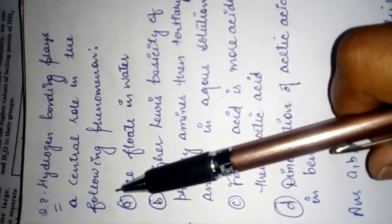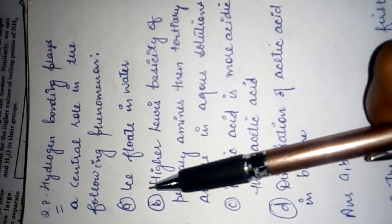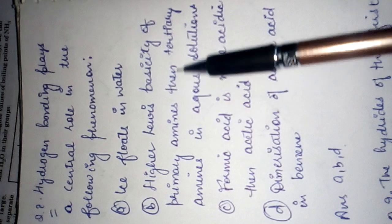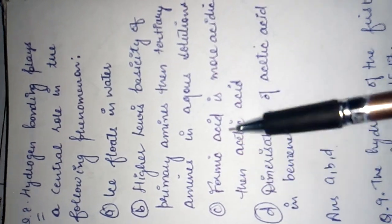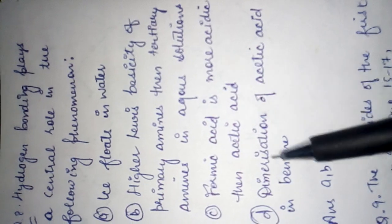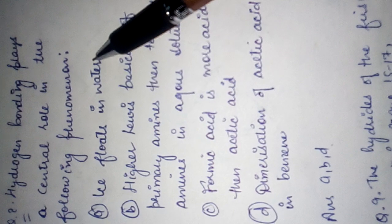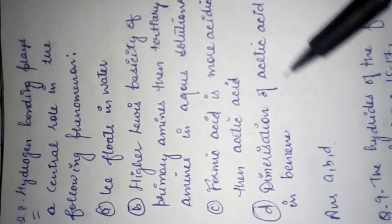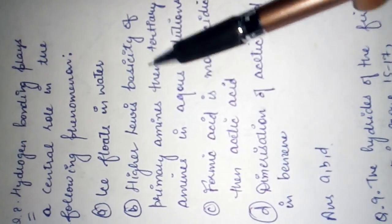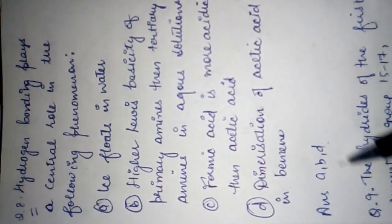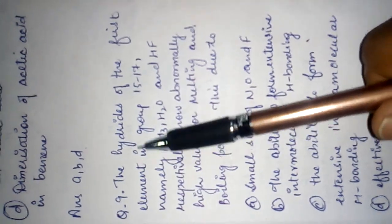Hydrogen bonding plays a central role in: (a) ice floats in water, (b) higher Lewis basicity of primary amines than tertiary amines in aqueous solution, (c) formic acid is more acidic than acetic acid, (d) dimerization of acetic acid in benzene. The answers are (a), (b), and (d). Option (c) is not explained by hydrogen bonding.